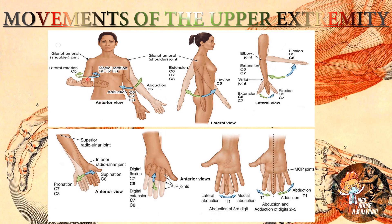In this anterior view, this movement is called lateral rotation, this movement is called medial rotation, this movement is adduction, and this is abduction. In this lateral view, you can see the normal position of the hand, this position is flexion, and this position is extension. From the elbow joint, this is flexion and this is extension.